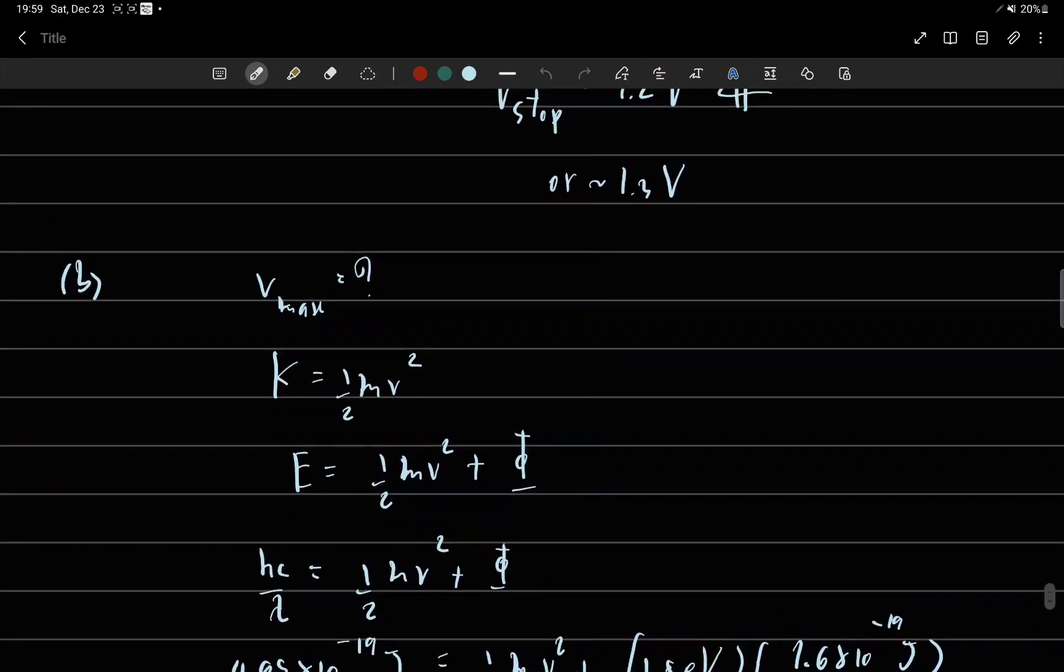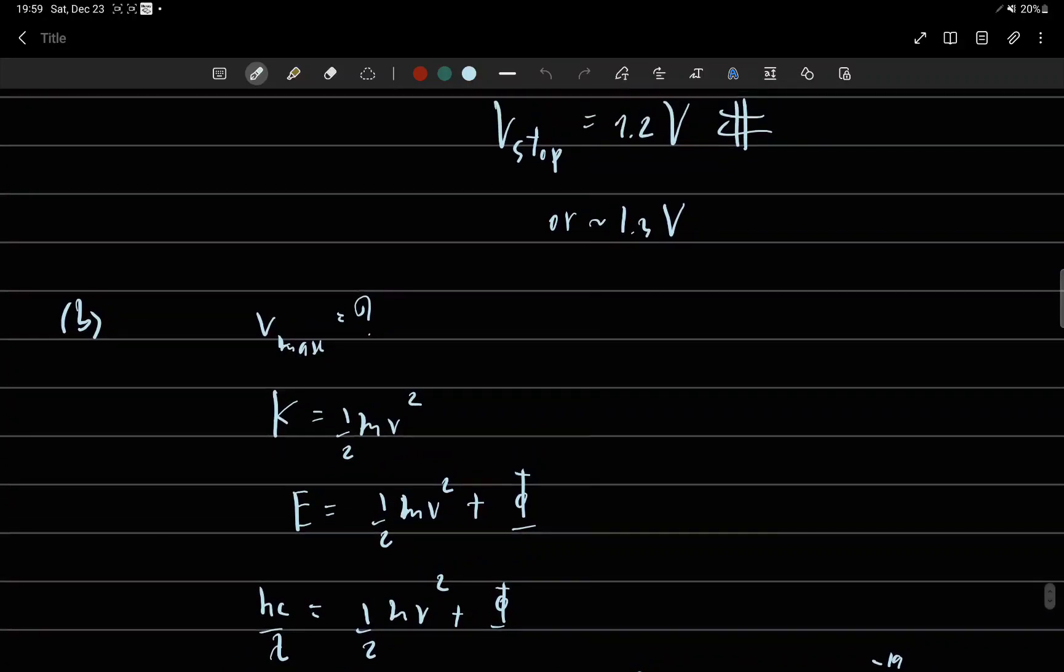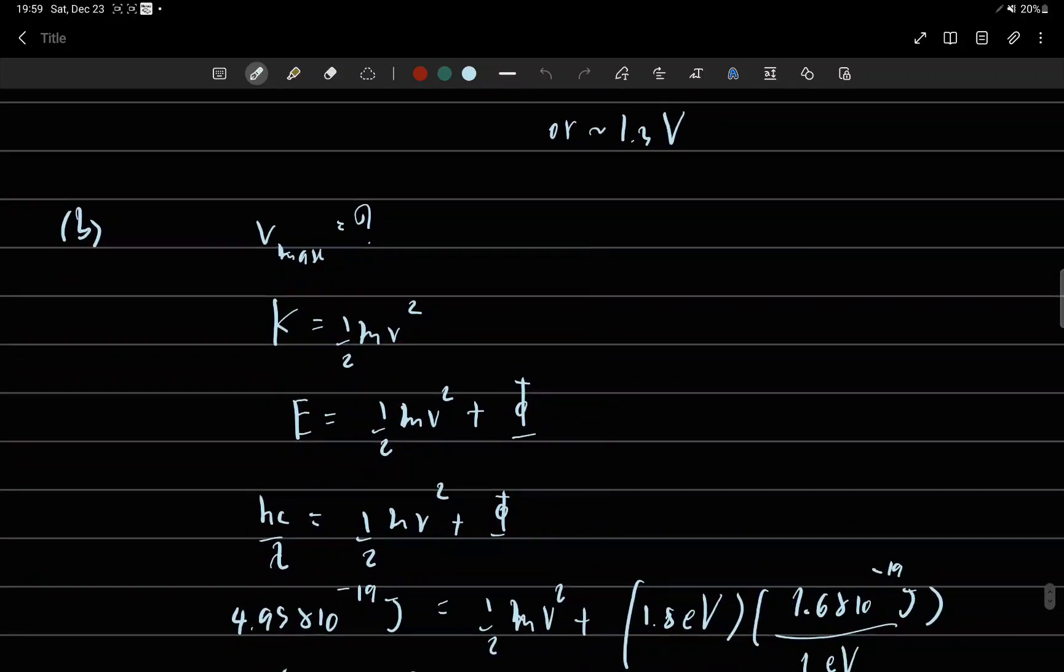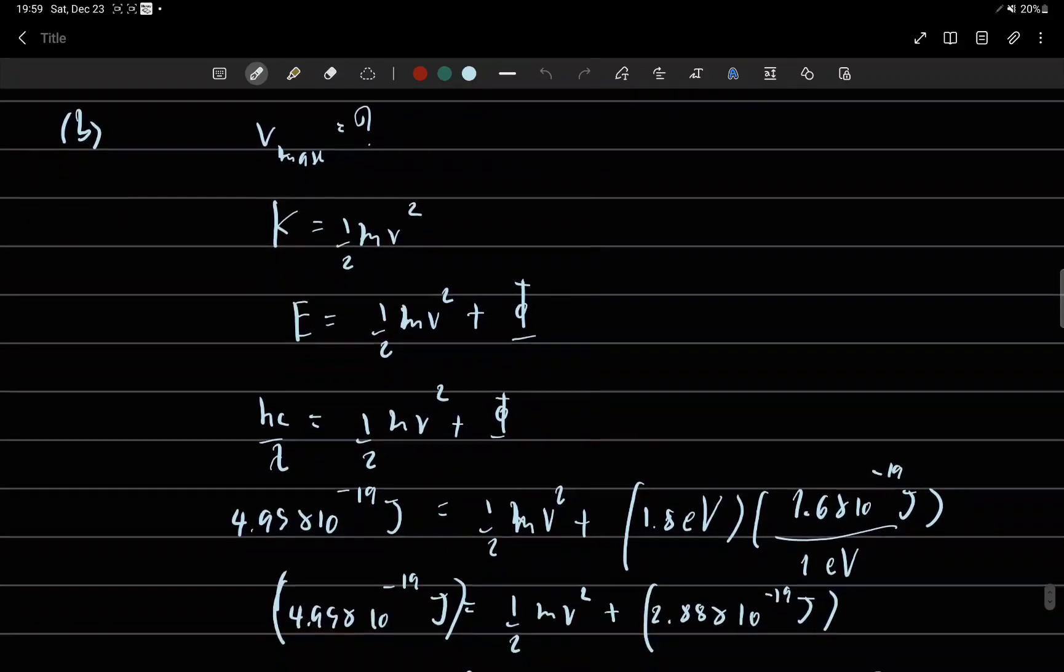From previous solution, we know that E equals hc over lambda. So we try to isolate only V.